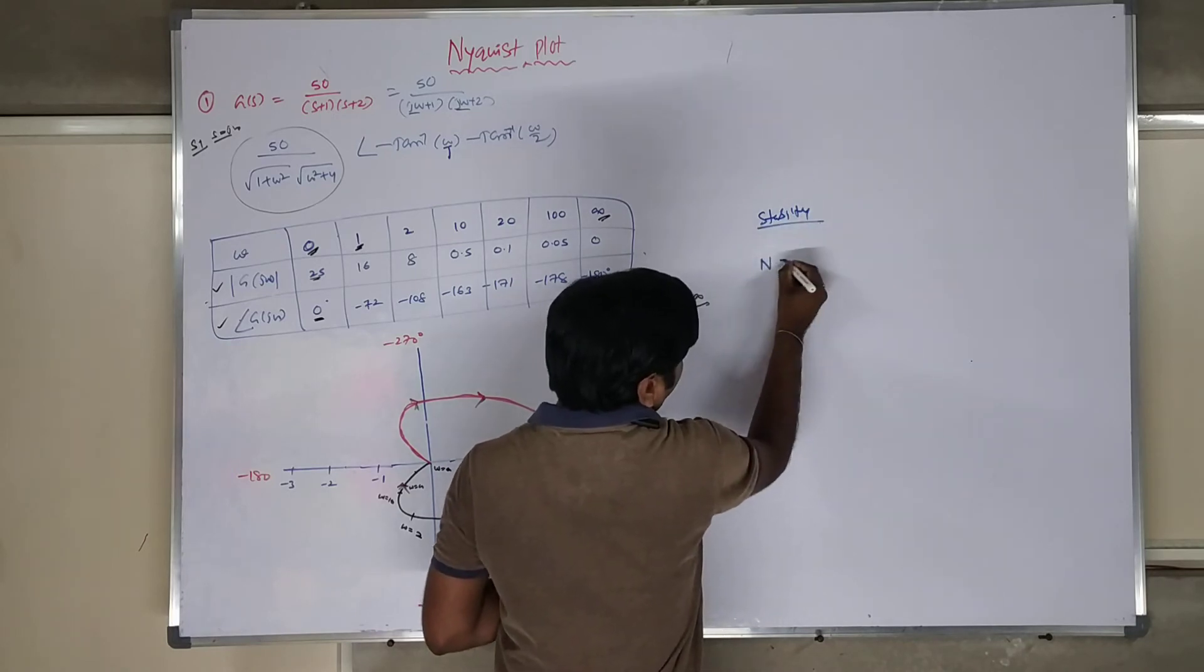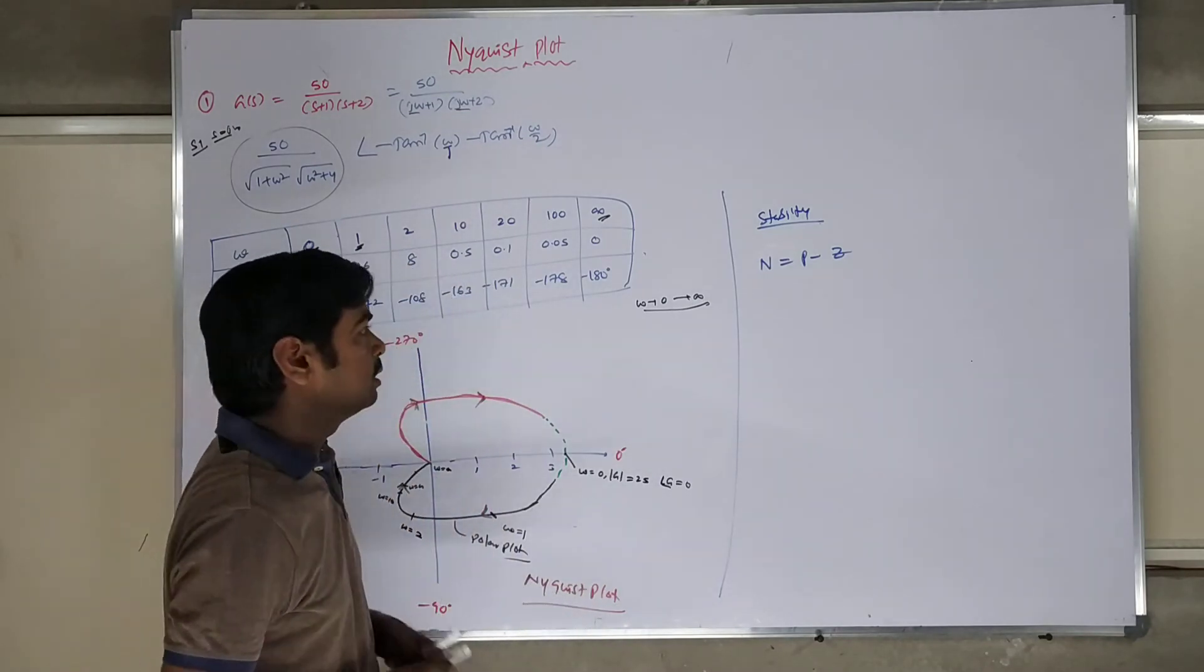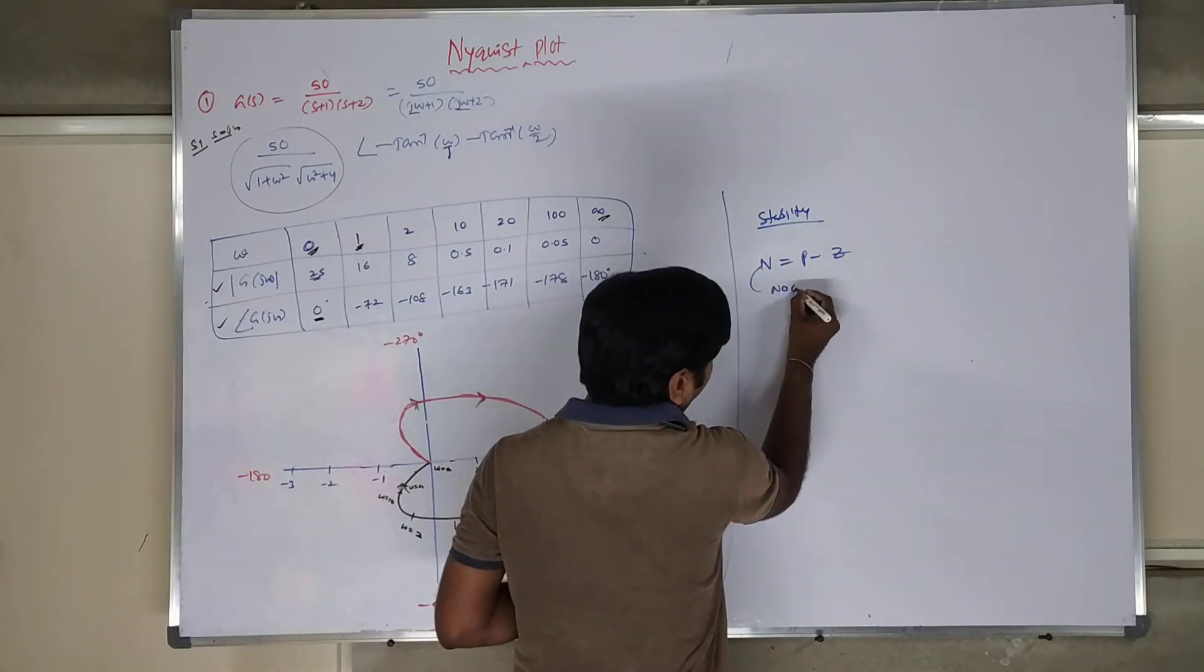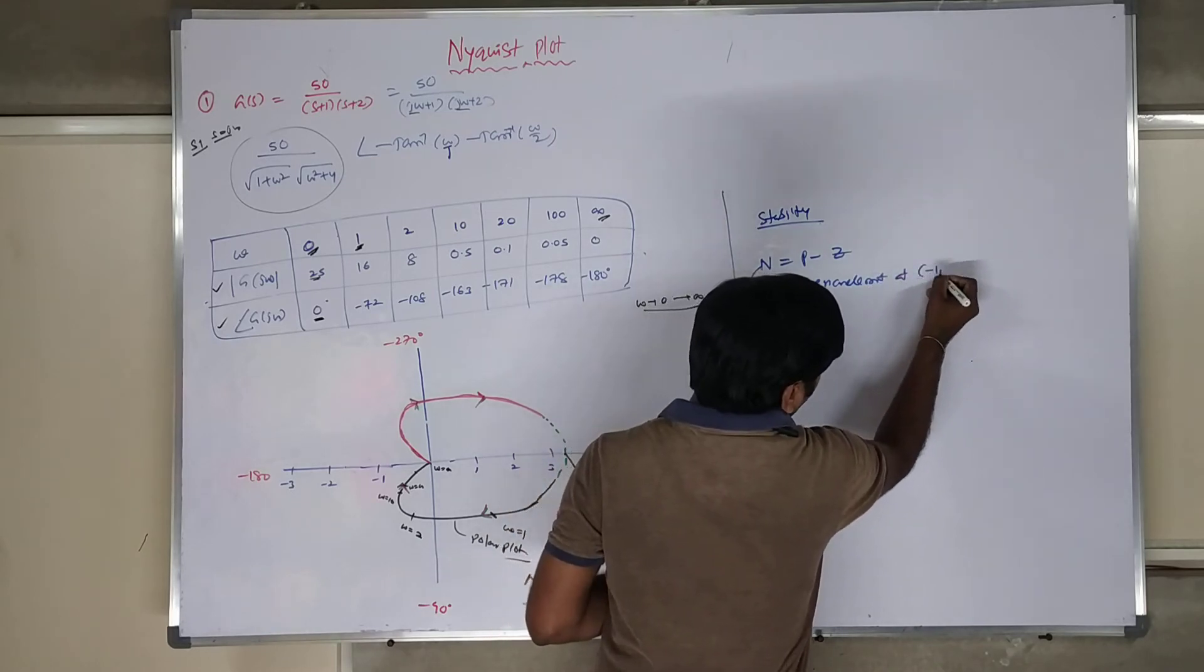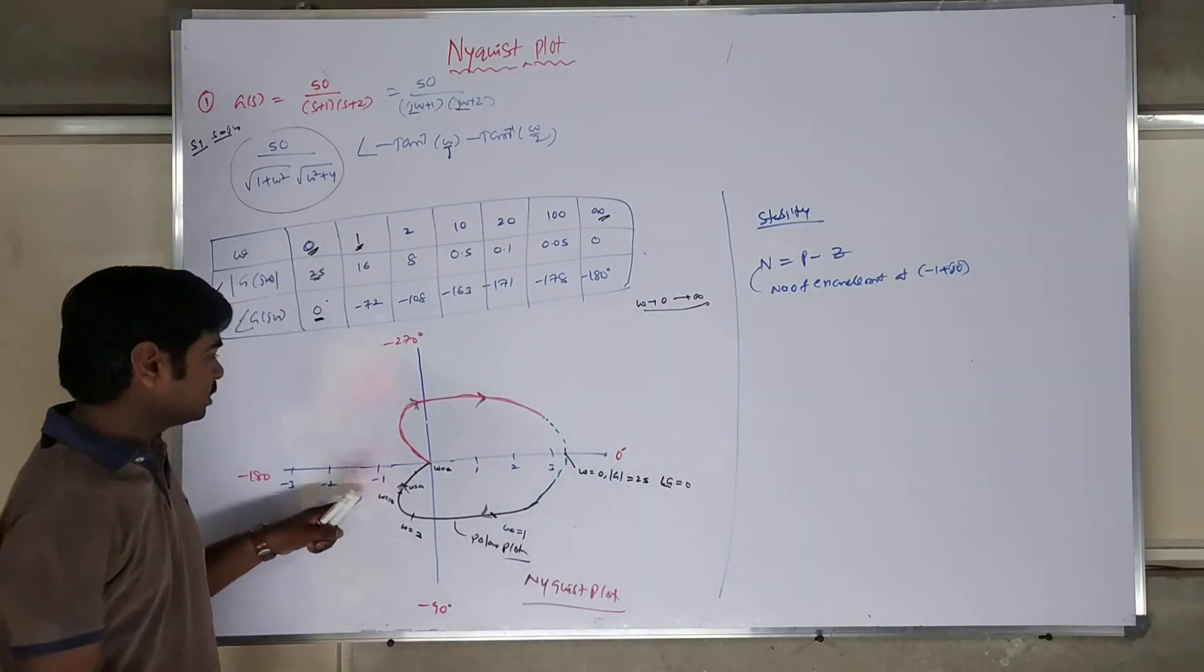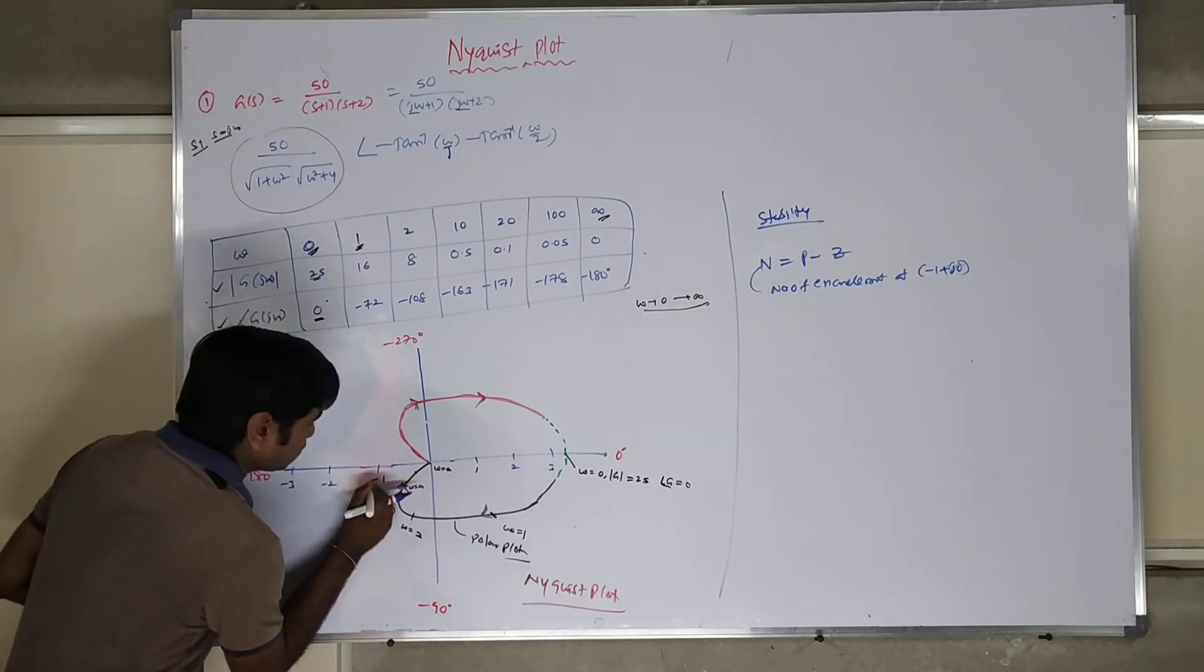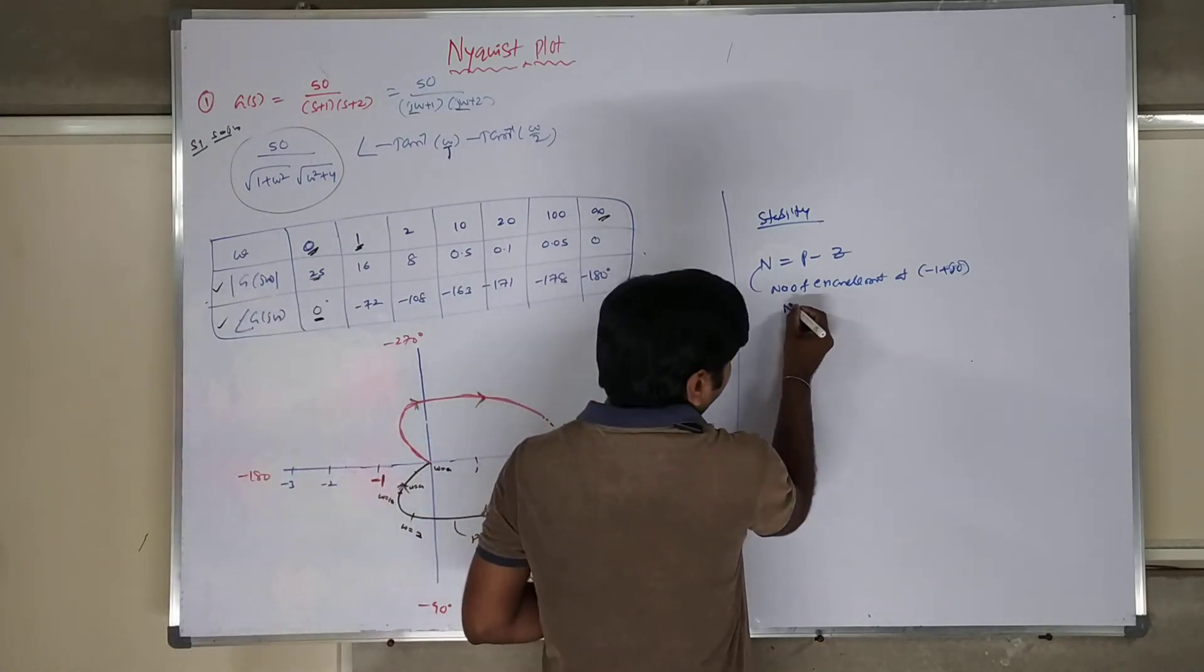After these things are over, when we go for finding stability, we have a formula. What is the formula? N is equal to P minus Z. N is number of encirclements at minus 1 plus j0. How many encirclements will be there? Is it closing? Is it touching? Any minus 1? Is it going to touch minus 1? No. So there is no encirclements for this. So you write N is equal to 0.